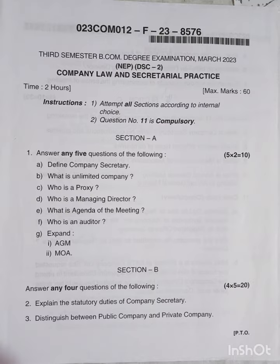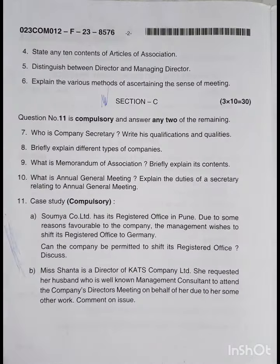Question number three: distinguish between public company and private company. Question number four: state any ten contents of articles of association.